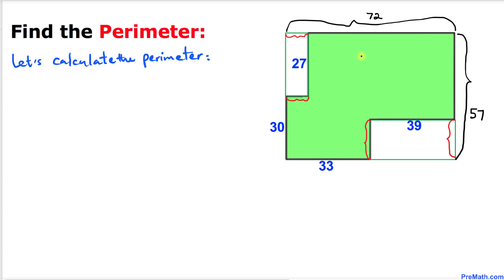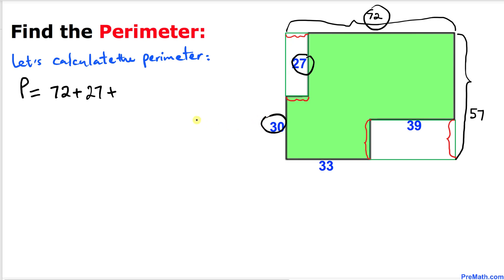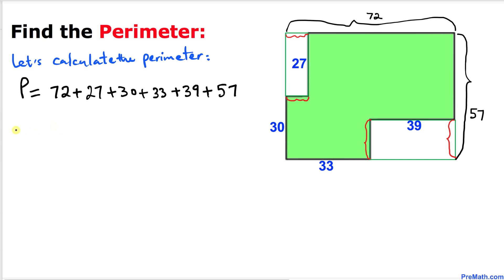Now let's go ahead and calculate the perimeter of this given shape. The perimeter equals 72 plus 27 plus 39 plus 30 plus 33 plus 39 plus 57.